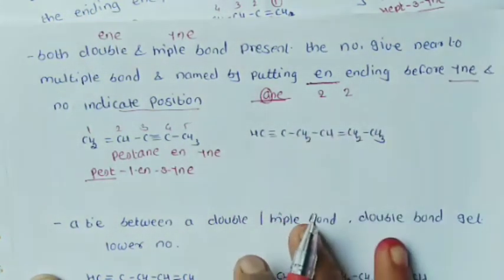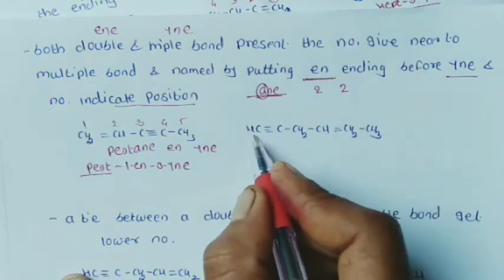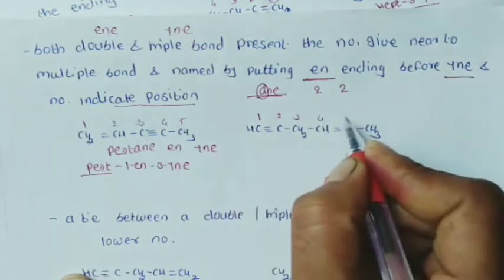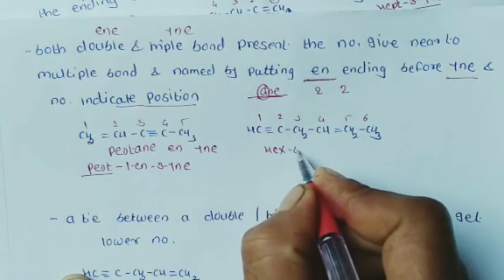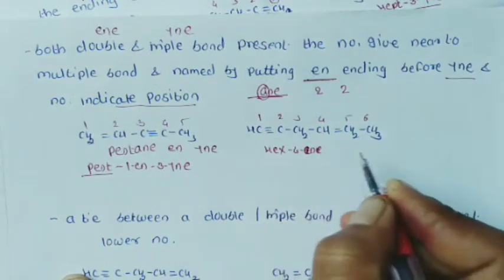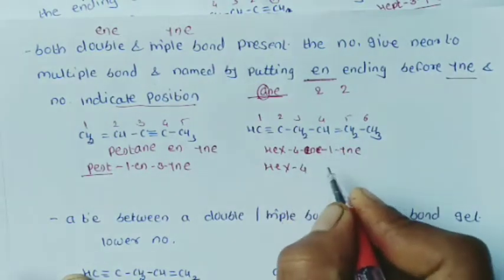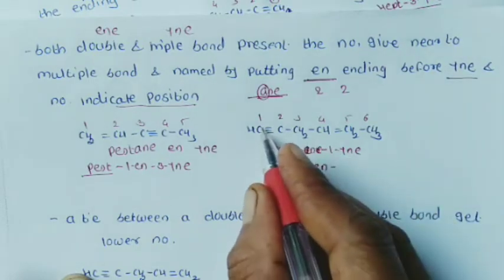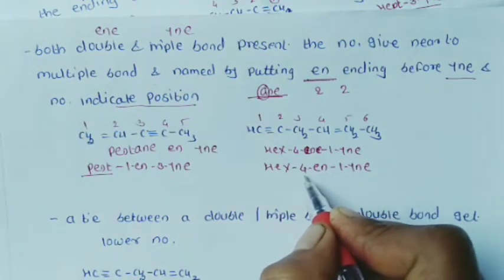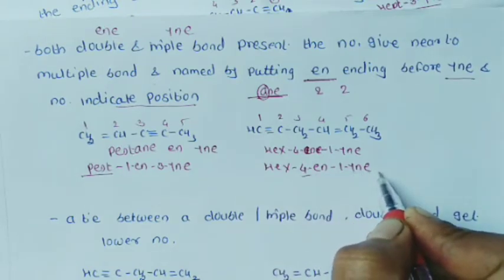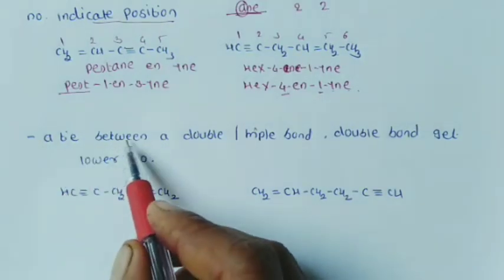Next example: CH≡C-CH2-CH=CH-CH2. Here the multiple bond is nearest to this side, so give numbering 1, 2, 3, 4, 5, 6 — six carbons, so this is hex. The carbon-carbon double bond starts at carbon 4, written as 4-en; the carbon-carbon triple bond starts at carbon 1, written as 1-yn. The IUPAC name is written with the '-en' number first, then the '-yn' number: hex-4-en-1-yne.